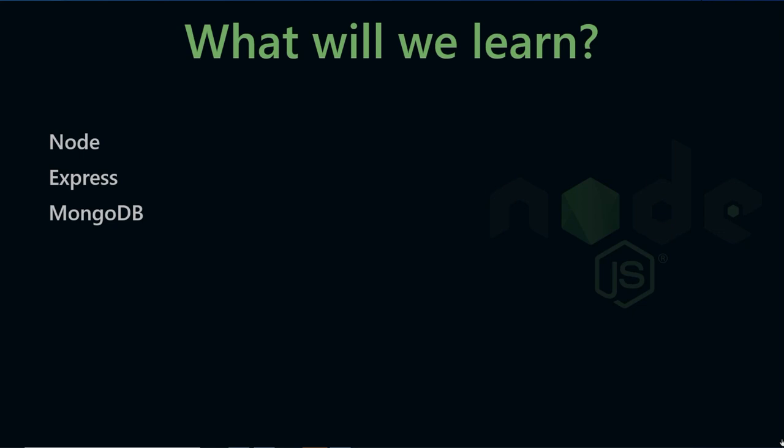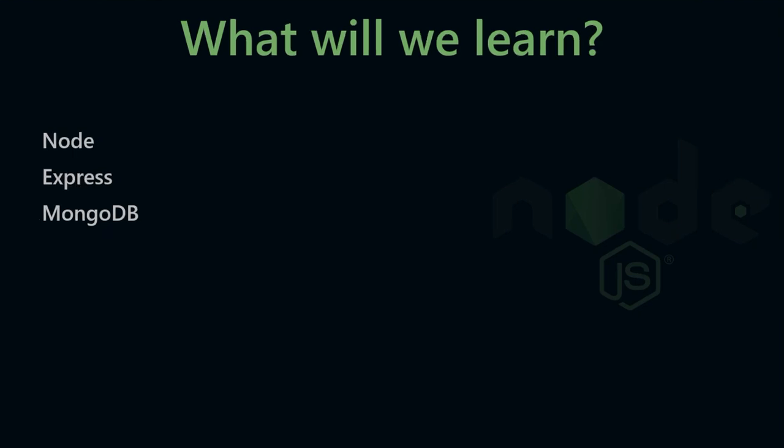For example, React has Redux, Python has Flask, PHP has Laravel. Similarly, we will use Node.js with Express.js. Then we will do every project using APIs and Express.